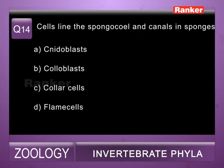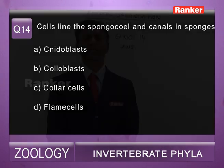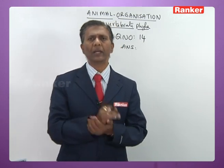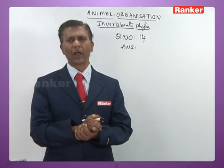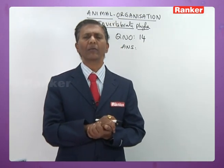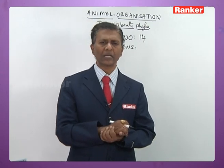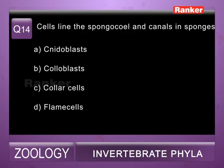Question fourteen: cells lining the spongocoel and canals in sponges — a) nidoblast, b) colloblast, c) collar cells, d) flame cells. In sponges, the spongocoel and the internal flagellated chambers are all lined by collar cells or choanocytes. So fourteenth question correct answer is c, collar cells.